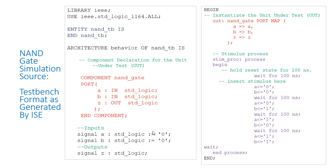We have signal A of standard logic data type with a starting value of zero — ':= '0'' determines the signal A which is standard logic type with a starting value of zero. These two signals represent the inputs. Signals can be used for input or output but they don't have any orientation in their definition — unlike ports, signals are bidirectional or non-directional connection wires, like jumpers.